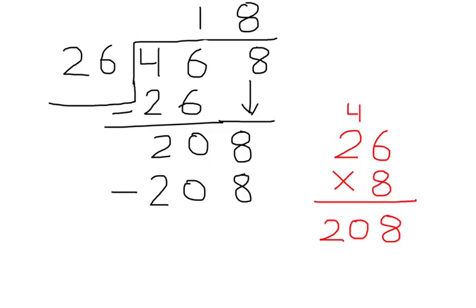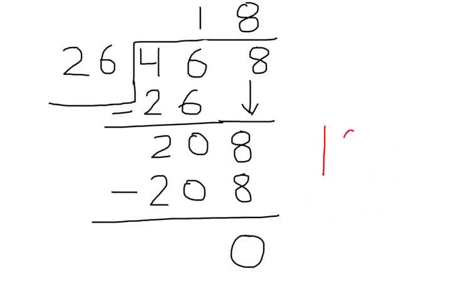208 minus 208 is 0, so our answer is 18 remainder 0, which means simply 18. There will be sums when you are left with some remainder, but always check that the remainder should be less than the divisor.